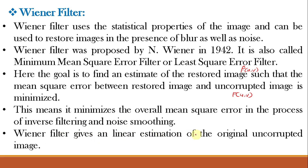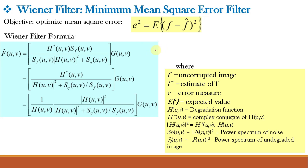The Wiener filter gives a linear estimation of the original uncorrupted image. When both noise and blur are present, the Wiener filter achieves a compromise between a low-pass and a high-pass filter, resulting in a band-pass filter. It rejects both low-pass blurring and high-pass noise, and that is why the Wiener filter is so popular. It incorporates both the degradation function and the statistical characteristics of noise — such as the mean value and power spectrum of the noise — into the restoration process.